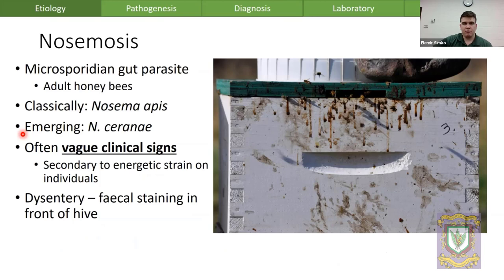Nosemosis in bees is a microsporidian parasitizing of the mid-gut of the adult honeybee — in contrast to the brood diseases covered so far. This makes it more difficult to diagnose because typically when an adult honeybee is compromised by disease, they die off somewhere we don't see them.